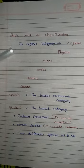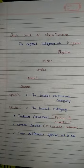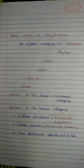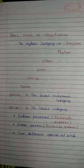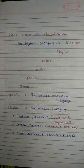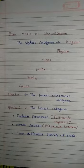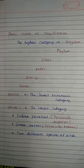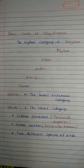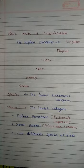Now we are going to see about species. Species is the lowest taxonomic category. For example, the large Indian parakeet and the green parrot are two different species.